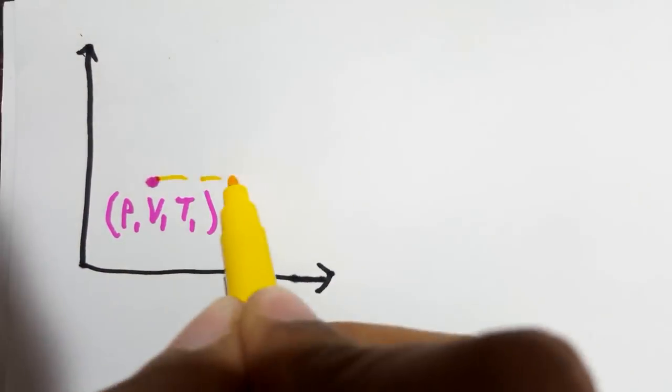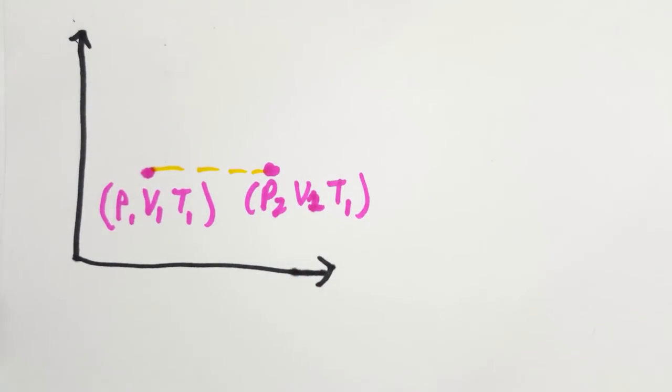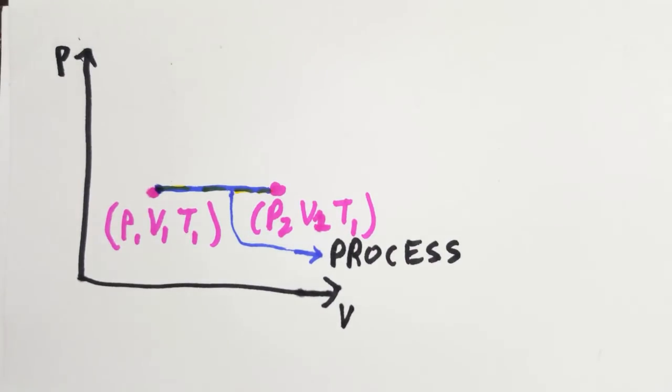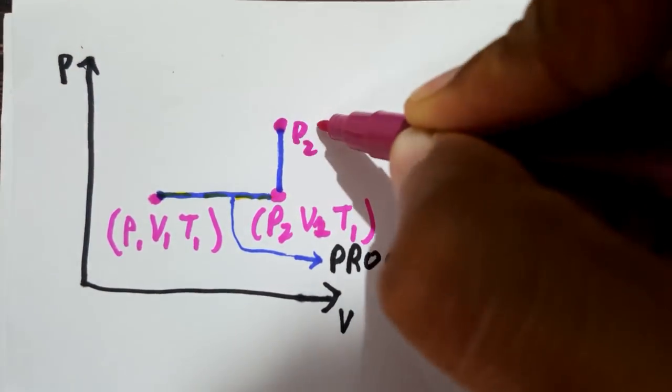Any operation in which one or more properties of a system change is called a change of state. When the path during your change of state is completely specified, the change of state is called a process.